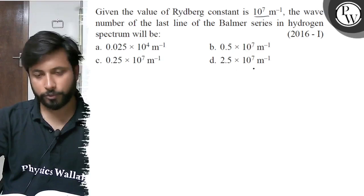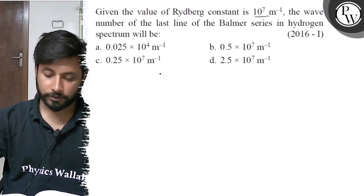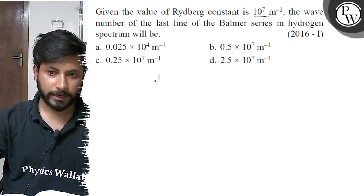Option D is 2.5 × 10^7 per meter. So here we have the formula: 1/λ = R...